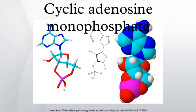When cAMP stimulates the HCN channels, the channels open, closing the brain cell to communication and thus interfering with the function of the frontal cortex. This research, especially regarding the cognitive deficits in age-related illnesses and ADHD, is of interest to researchers studying the brain.